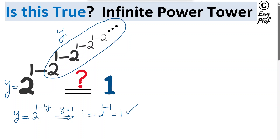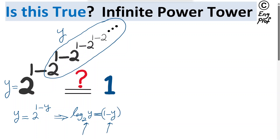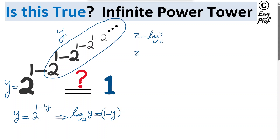Let's prove it. There are many ways, but one quick way is to take log base 2 from both sides. So log base 2 of y equals log base 2 of 2 to the power (1 minus y), which is effectively just 1 minus y. So it's as if we are setting two functions equal to each other: z equals log₂(y), and z equals 1 minus y, which is a line with a negative slope.